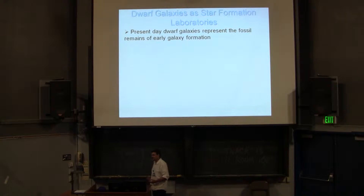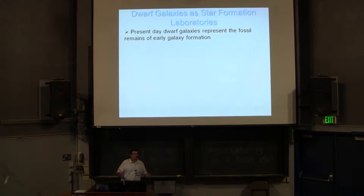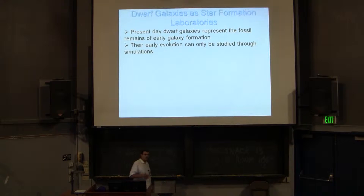Back in the 70s, studies like Searle and Zinn were talking about present-day dwarf galaxies — they're the fossils of hierarchical growth in galaxies. We take the small things, they collapse, we throw them together, we make the big things. So if we can study what they look like, we know what they look like now, we'd like to look at what they look like early on.